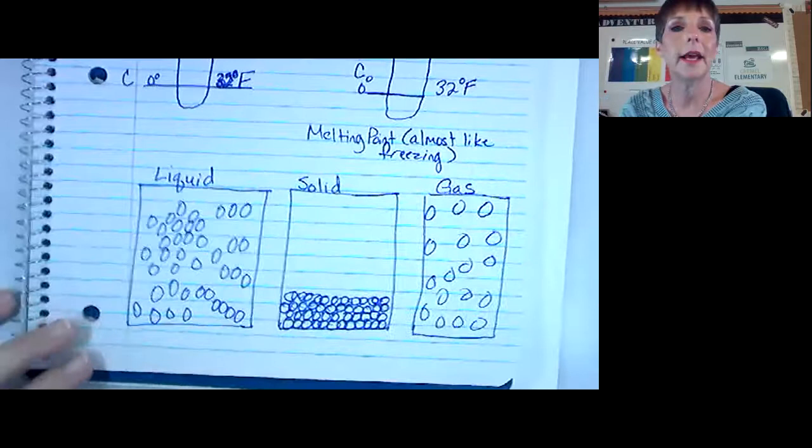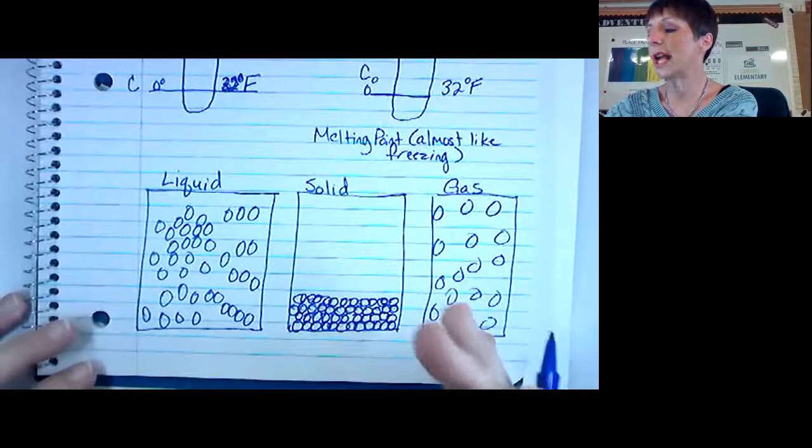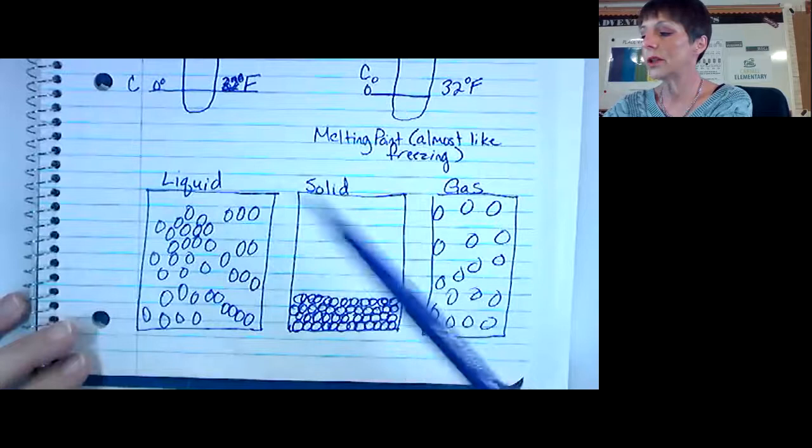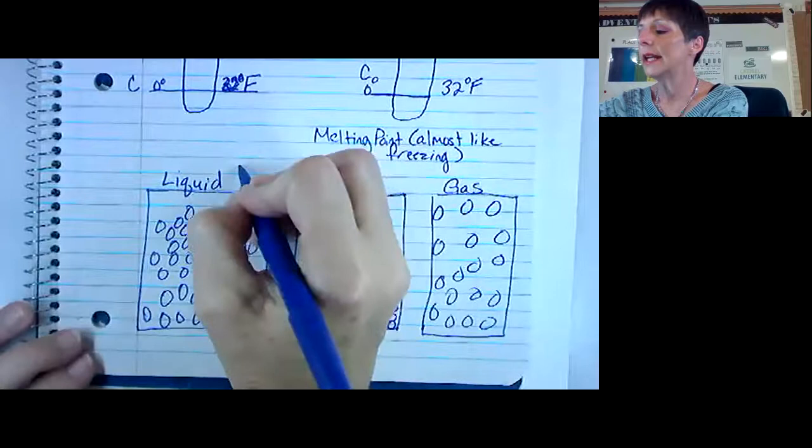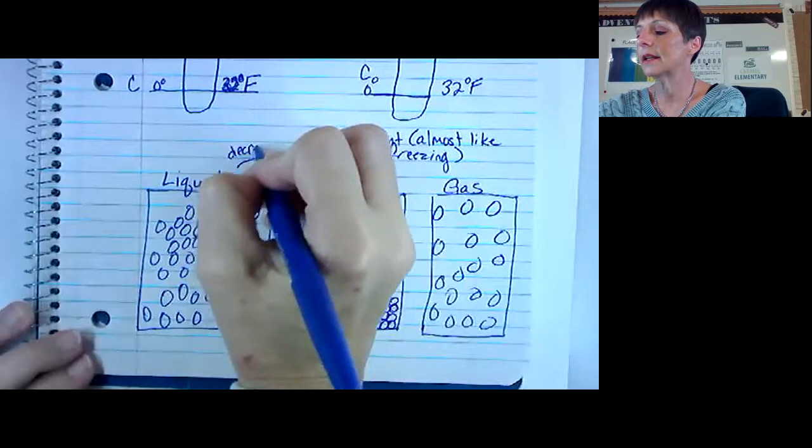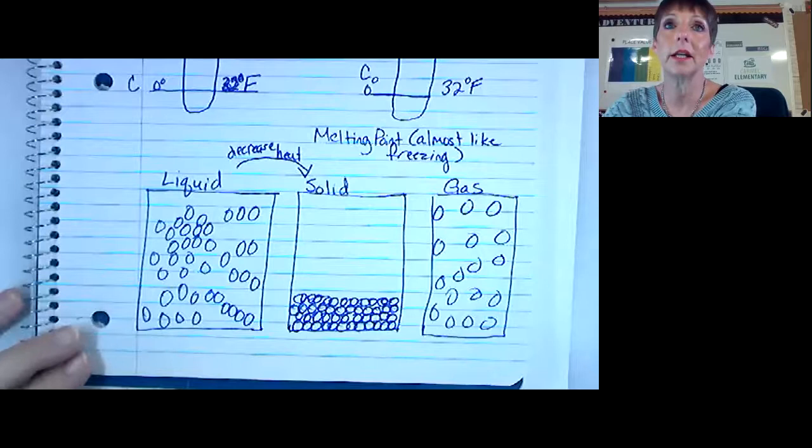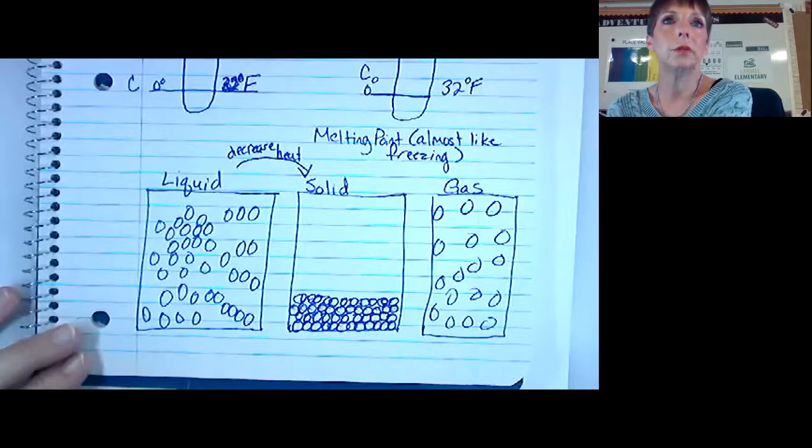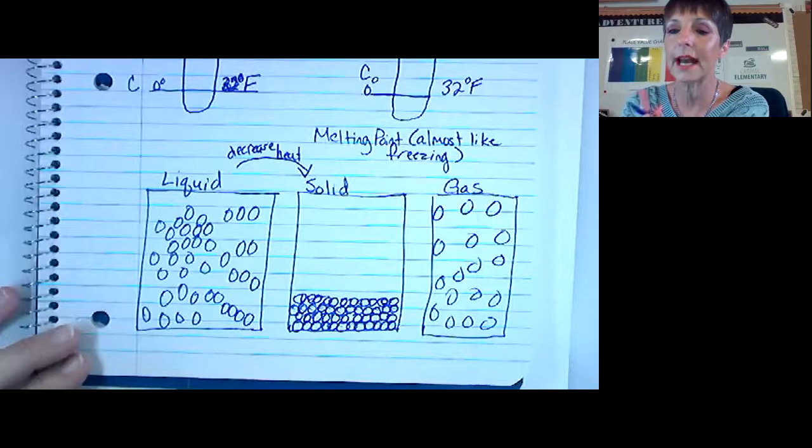When you add temperature, the temperature changes these states. If I wanted to go from a liquid to a solid, I would decrease the temperature, decrease heat. That makes sense, I'm going to freeze something so it's going to get cooler. And remember, we talked about there is no word like cold in science, it's just absence of heat. Decrease heat if I wanted to go from liquid to solid.